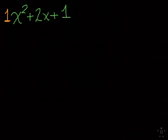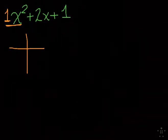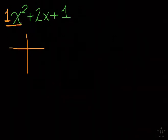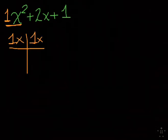Now what I want you to do is draw a t-chart below, however you have it written to the side. I'm going to take this first term, this 1x-squared, and just put 1x and 1x on top of the t-chart. Not x-squared, just x — so don't put a square on it.